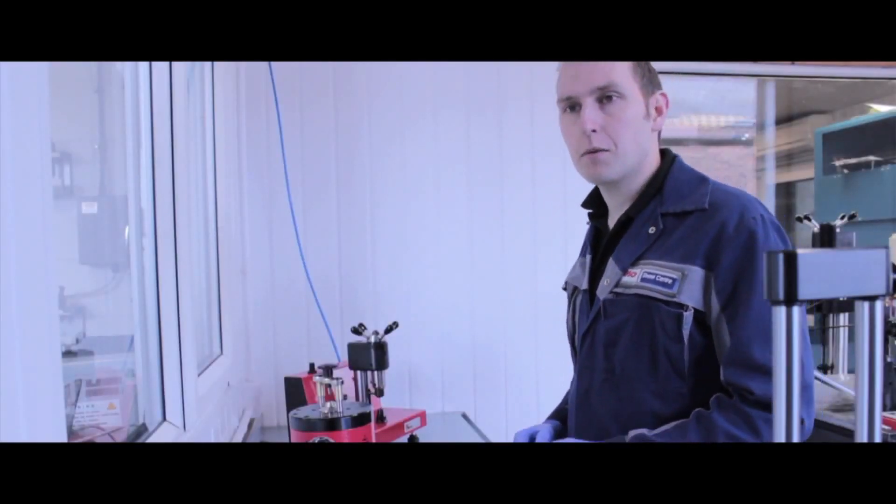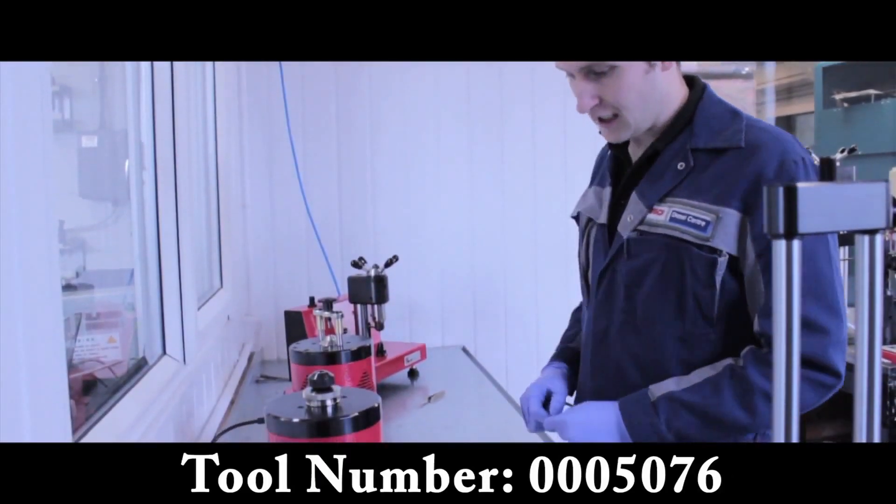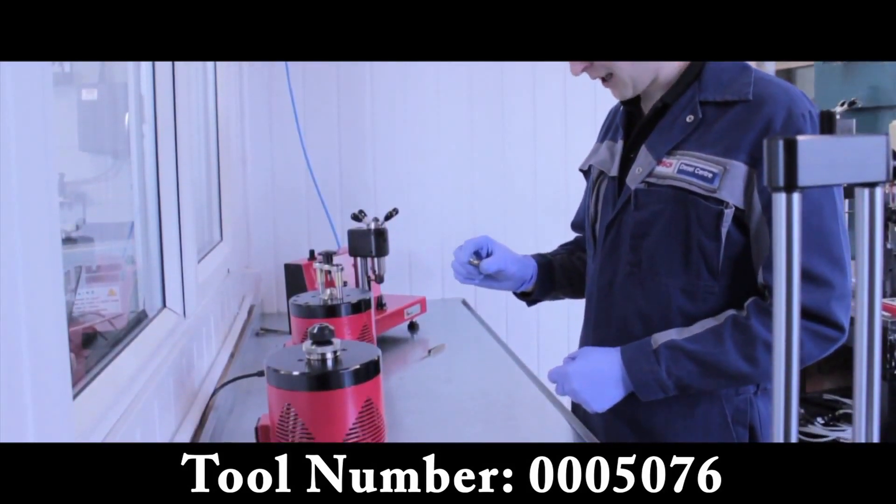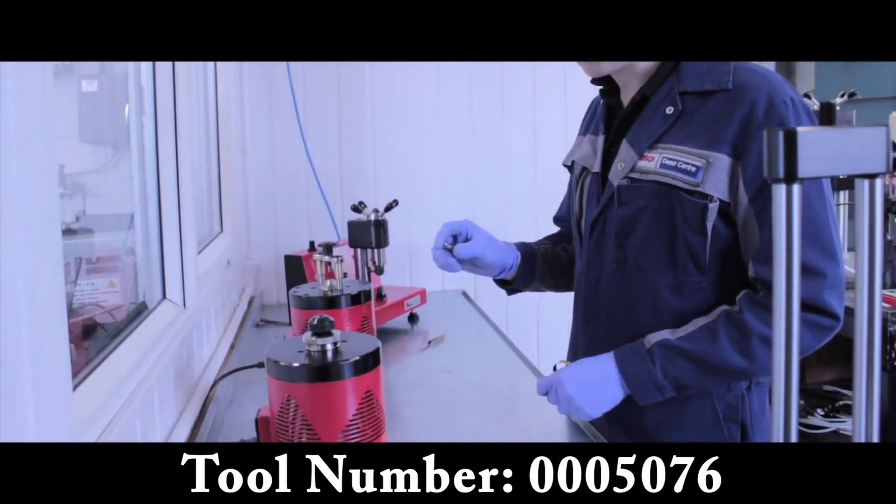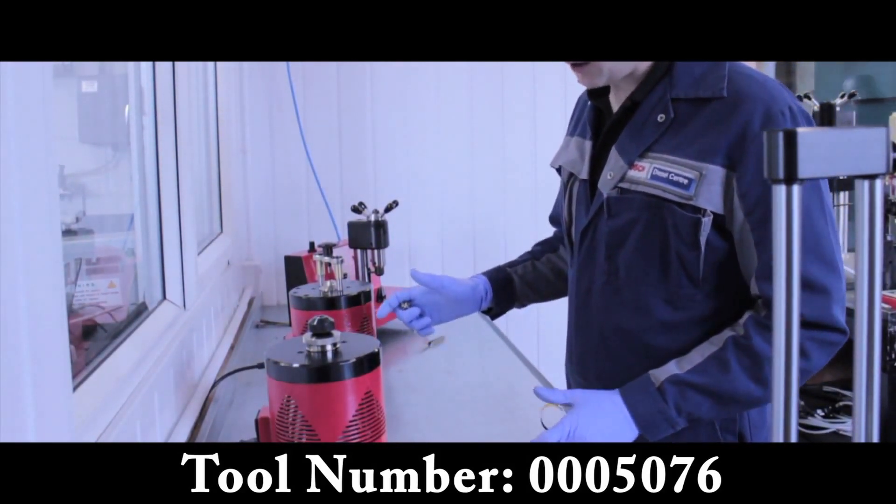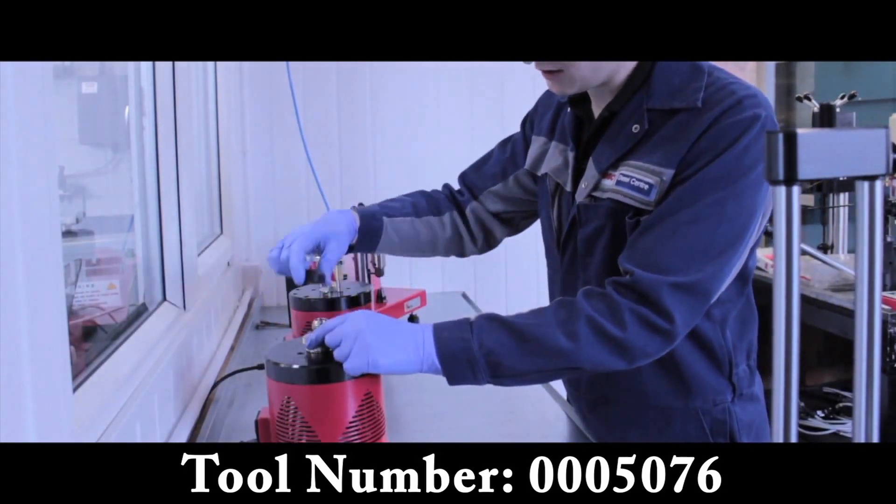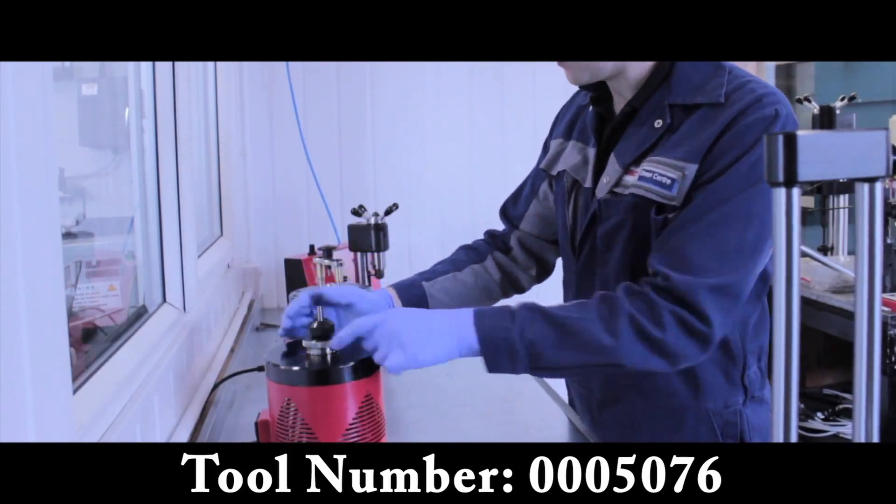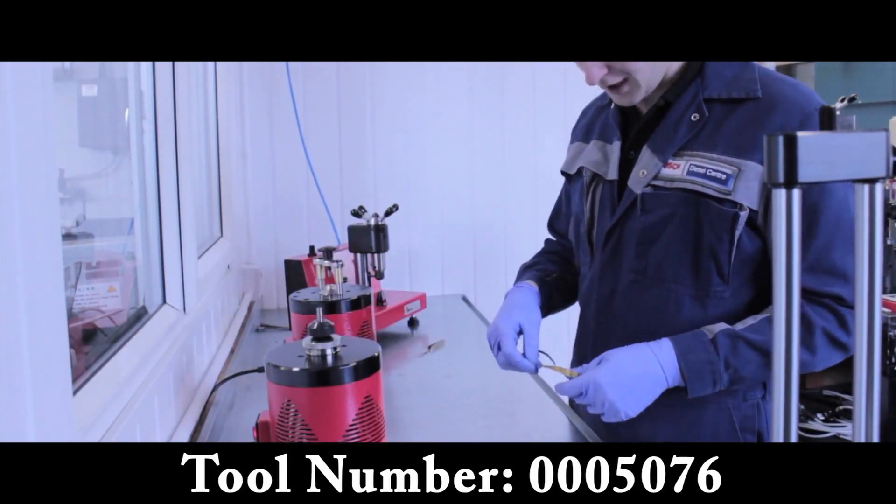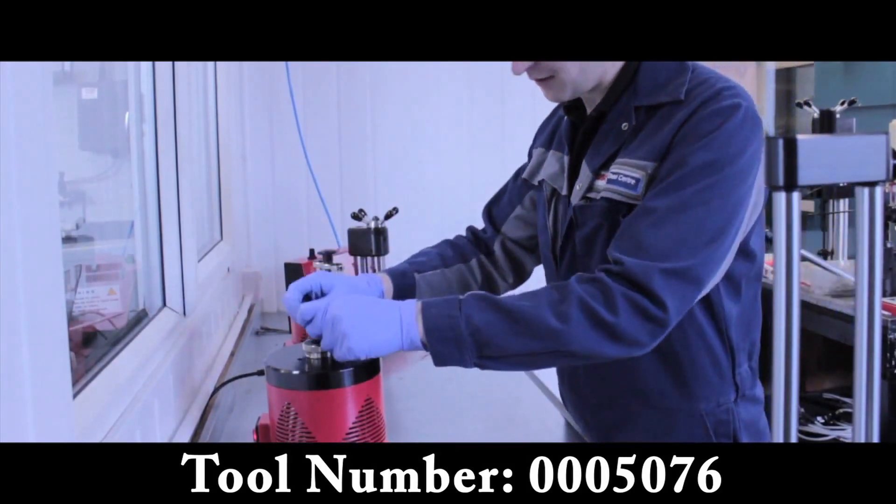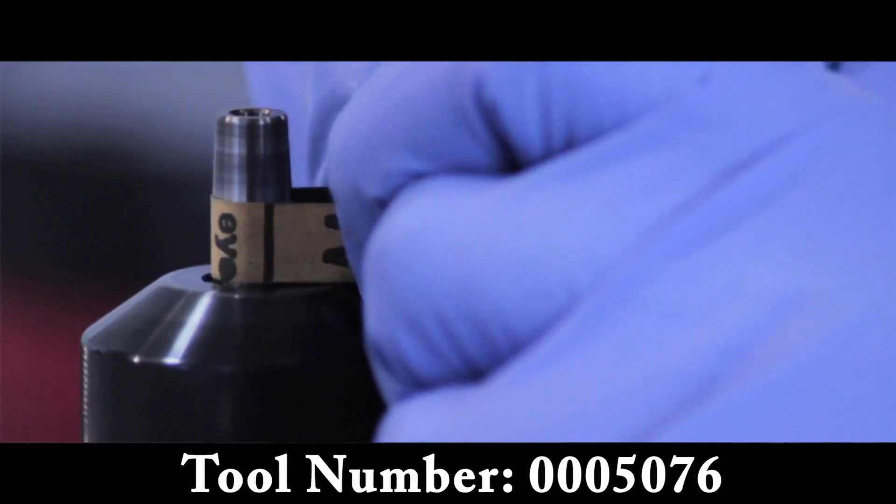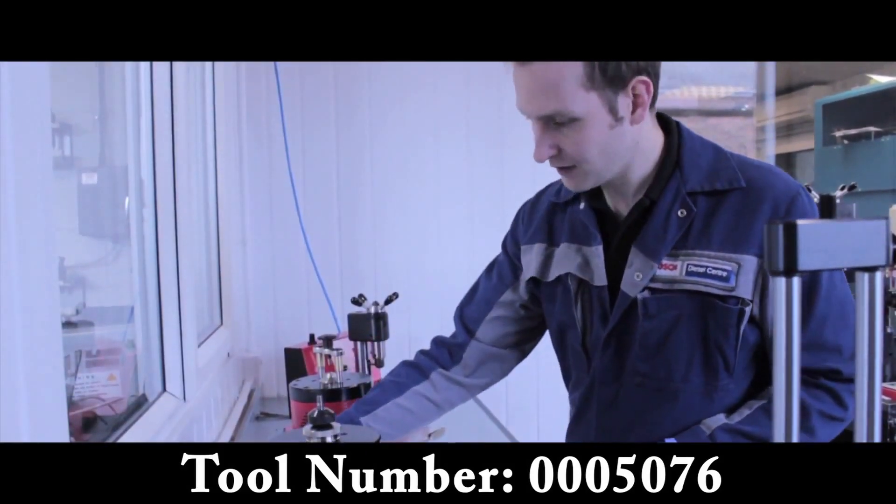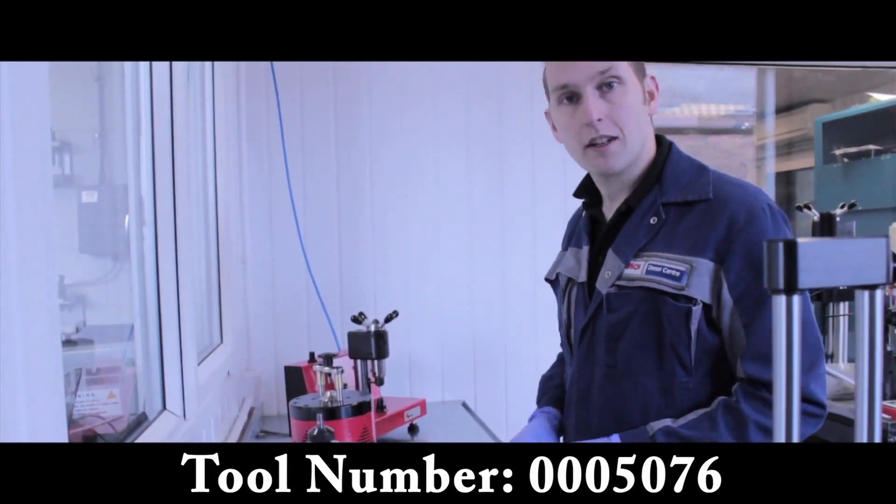Another tool in the range is the 0005076. This is for simply cleaning up the seal marks off of your pilot valves, making a better seal once re-fitting into the injector. So again, very simple item to use. Remove the retainer nut, place your pilot valve in and secure. Switch your motor on, and taking another fine piece of paper, we're just going to clean it up. Once it's done, wash off, and it's ready to go.